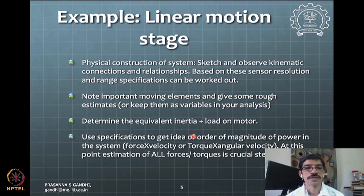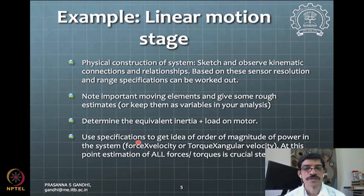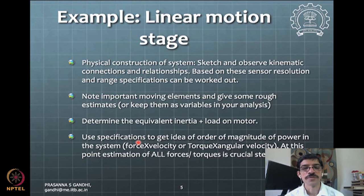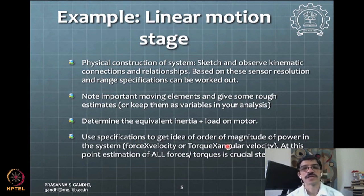You can use power relationships such as force times velocity, or torque times angular velocity. For a linear stage, you can estimate the force on the output side as friction force plus inertial load force, combined with the maximum velocity, to get a conservative estimate of total power required. Alternatively, translate that into torque and angular velocity on the motor side.